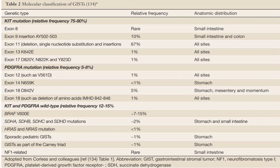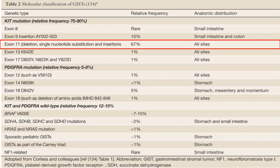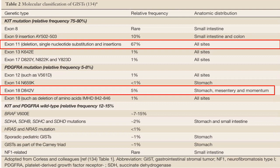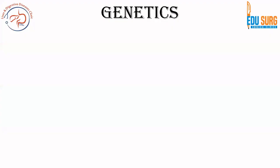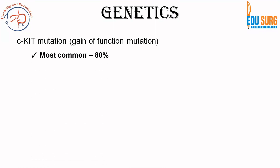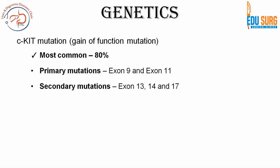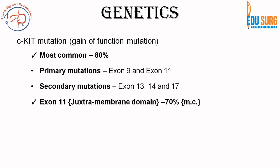In KIT mutation, the most common is the exon 11 mutation — a very commonly asked question. In PDGFRA, the most common is the exon 18 mutation, which is seen in the stomach, mesentery, and omentum. CKIT mutation is usually a gain-of-function mutation and is the most common mutation seen in GIST. It can have primary mutations in exon 9 and 11, and secondary mutations in exon 13, 14, and 17.